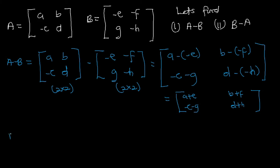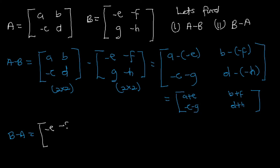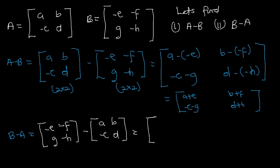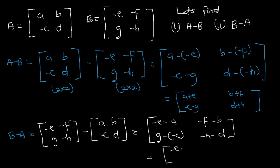Now let's find B - A. We write matrix B first: [-e, -f; g, -h] minus [a, b; -c, d]. Subtracting element by element: -e - a, -f - b, g - (-c) = g + c, and -h - d. Simplifying gives: [-e-a, -f-b; g+c, -h-d].